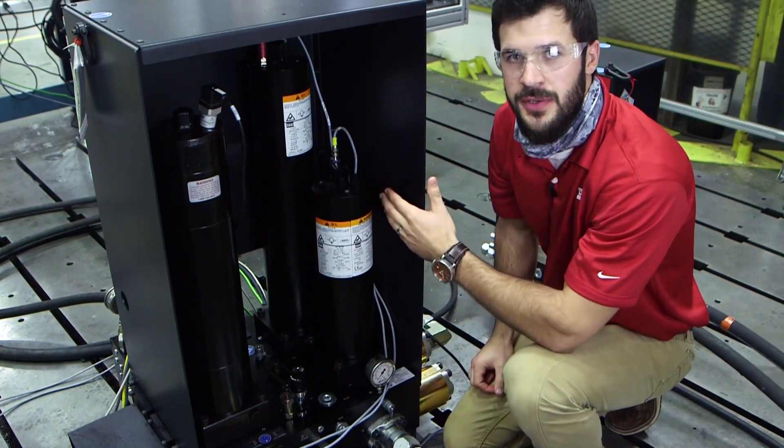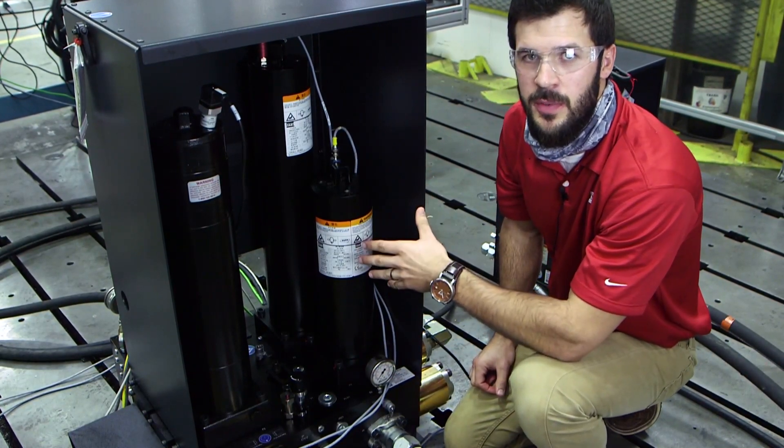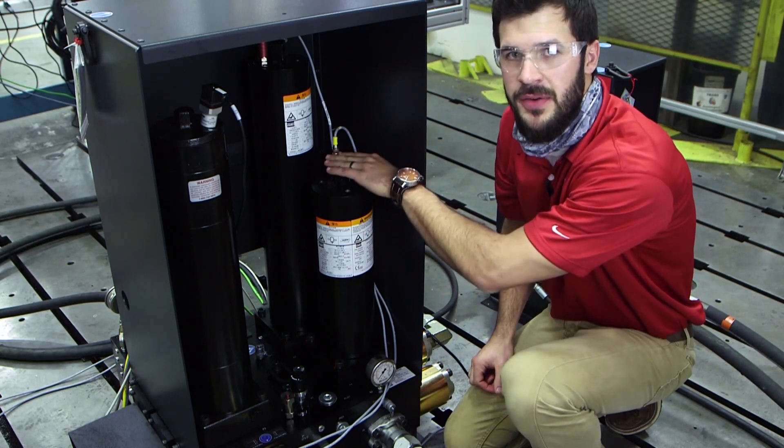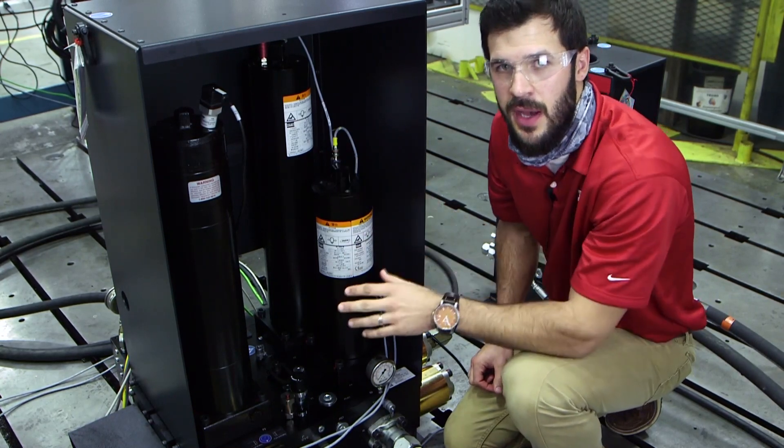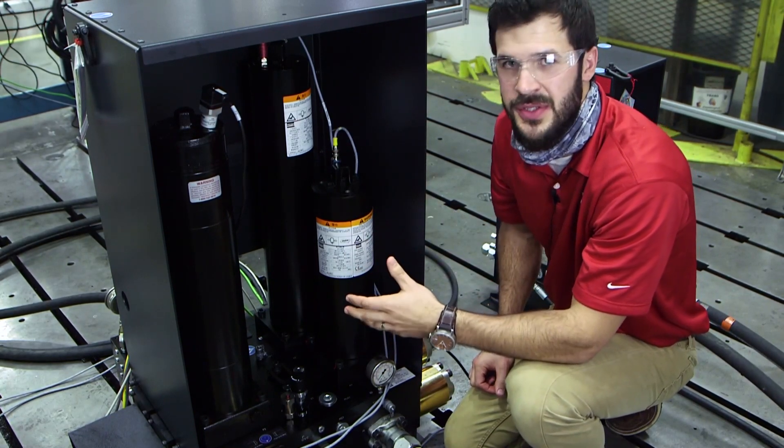We also have a one gallon pressure accumulator and a half a gallon return accumulator, which are both being monitored on the nitrogen side to ensure that you have the proper pre-charge on your system.